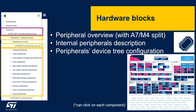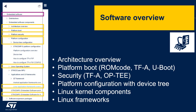The hardware blocks are presented with a peripheral overview. You can click on any peripheral and follow the links to the peripheral description and how to configure the device tree for that peripheral. The software architecture is also presented. Platform boot is presented with ROM code, TF-A, and U-Boot for the boot chain. Security is presented with TF-A and OPTEE. Platform configuration with device tree is available for each peripheral.